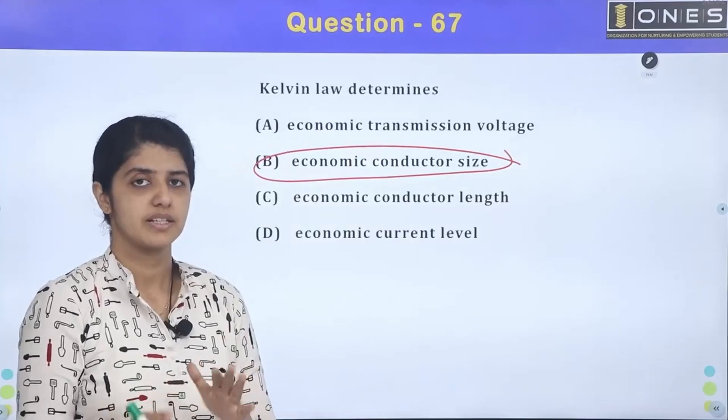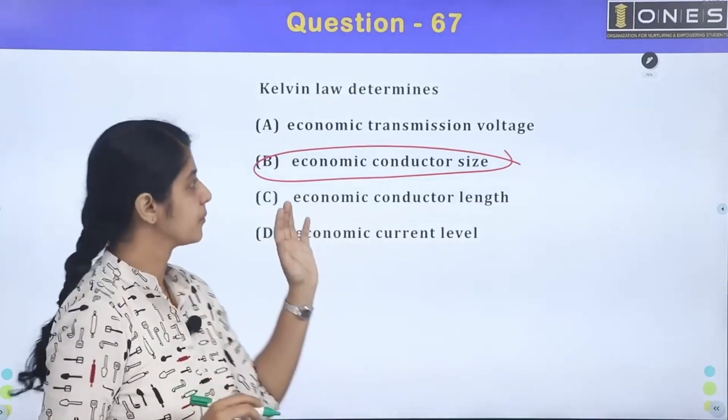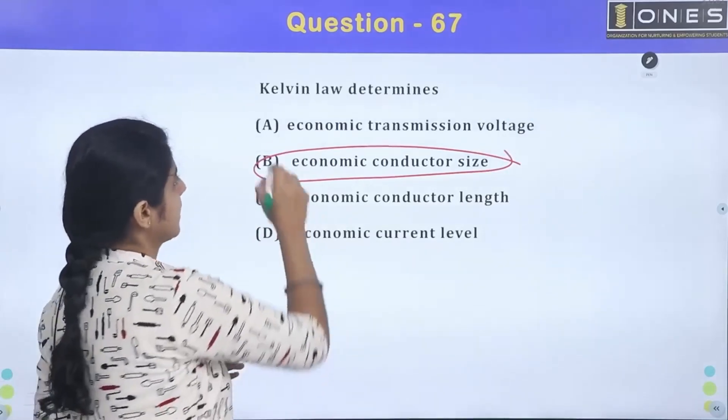In every equation we have formed, we have variable part equals constant part. We have to learn this. So economic conductor size is determined by Kelvin's law.